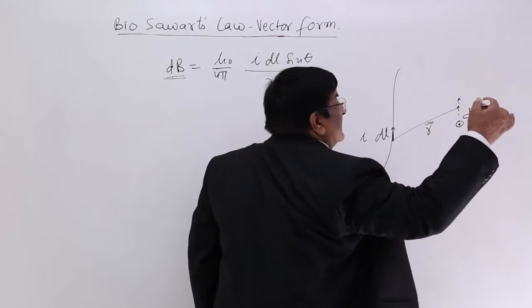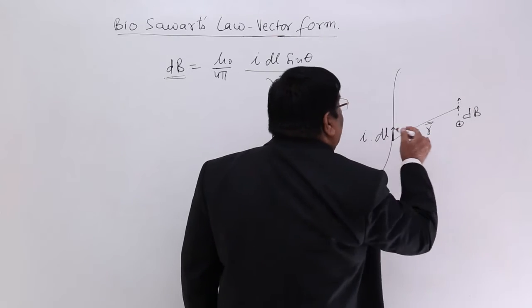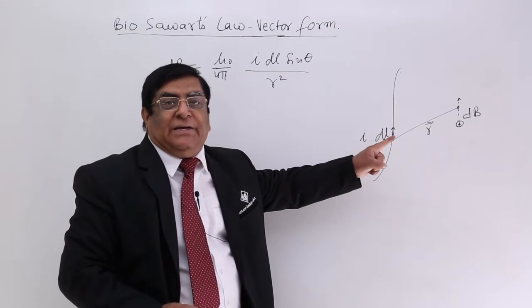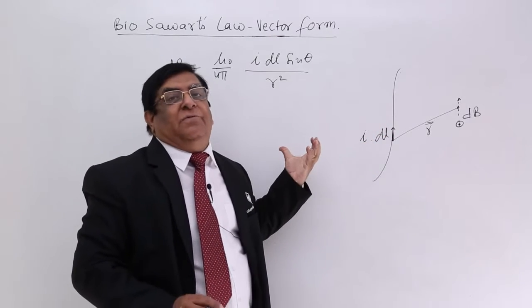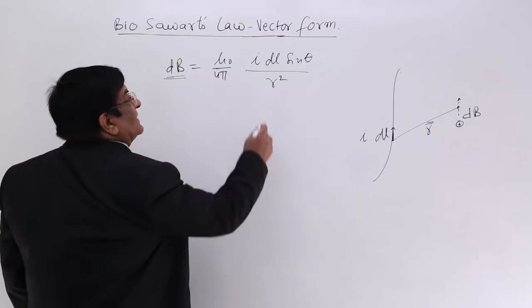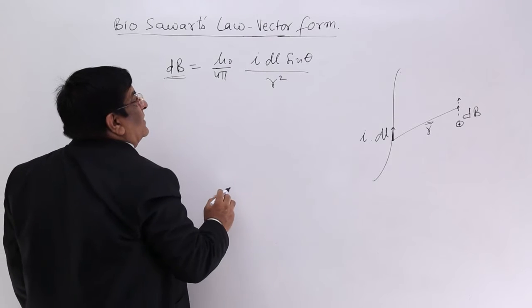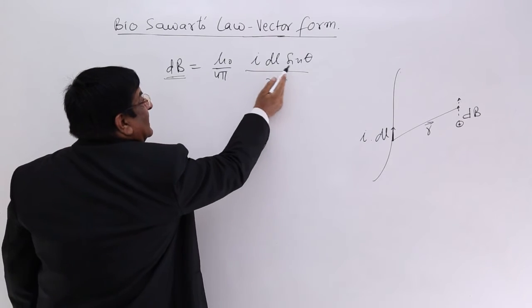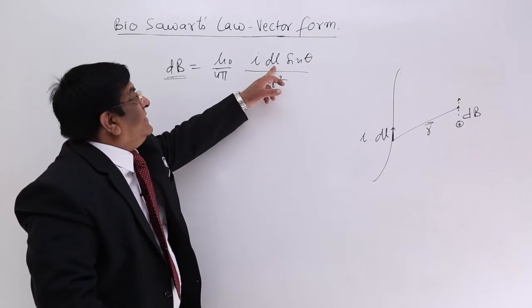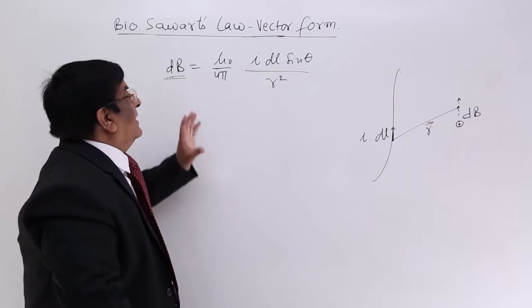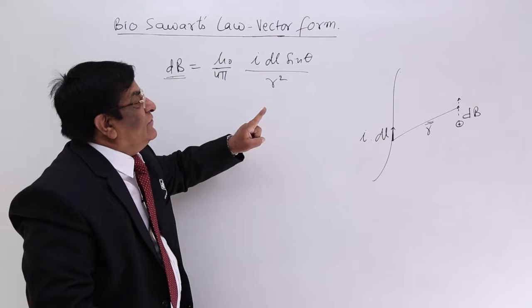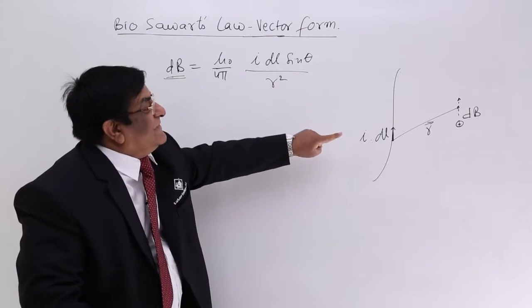Here you see dB is normal to the direction of r and normal to the direction of dl. So how can this direction be represented in mathematical form when we write a formula? Which are the vector quantities here? Answer: dl is a vector quantity and r is a vector quantity. i is a scalar quantity, theta is only a fraction, sine theta is only a fraction. So we have these two vector quantities here.